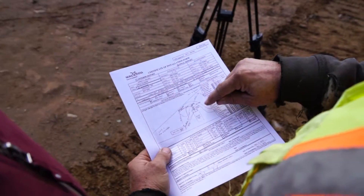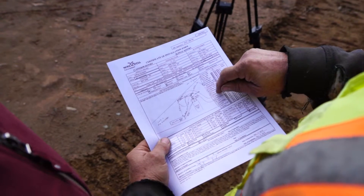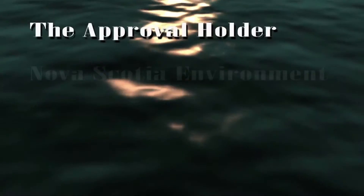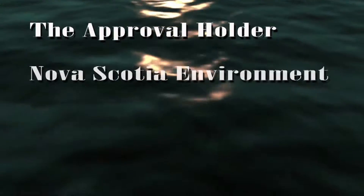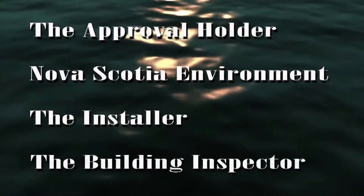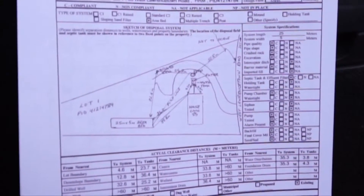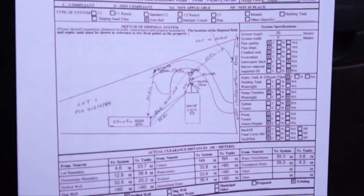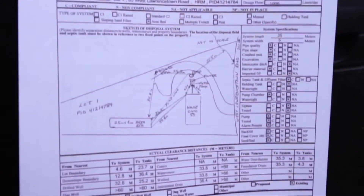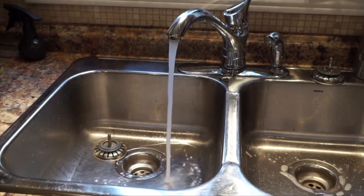After the final inspection, the qualified person will complete the certificate of installation form and send copies to the approval holder, Nova Scotia Environment, the installer, and the building inspector. This will include a diagram of the system showing the location of all parts, which should be kept with the deed for future reference.